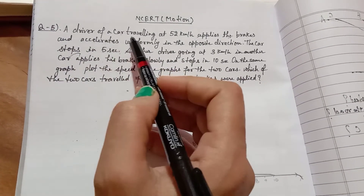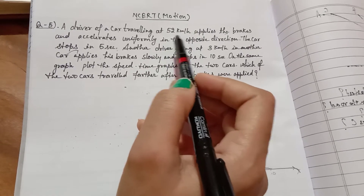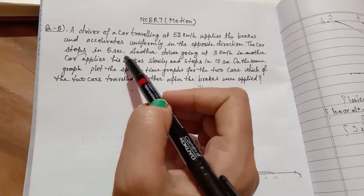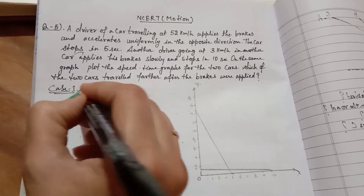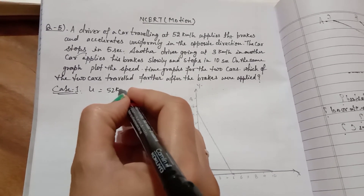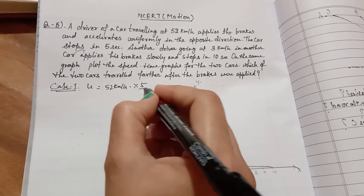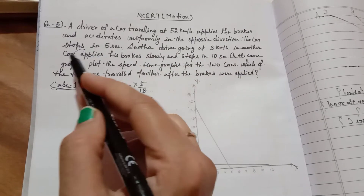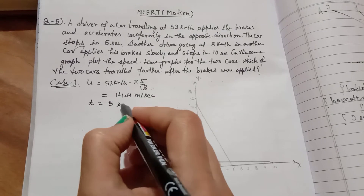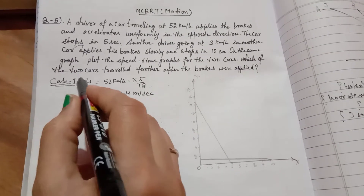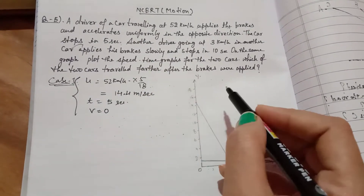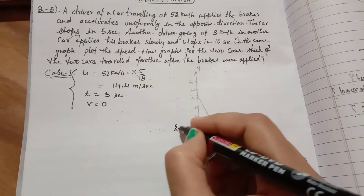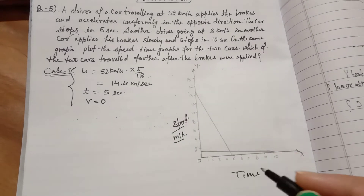Question 5: a driver travelling at 52 km/h applies the brake and decelerates uniformly, stopping in 5 seconds. Convert 52 km/h to m/s: 52 × 5/18 = 14.4 m/s. So case 1: u = 14.4 m/s, t = 5 seconds, final velocity v = 0. Plot a graph with time on the x-axis (in seconds) and speed on the y-axis (in m/s).